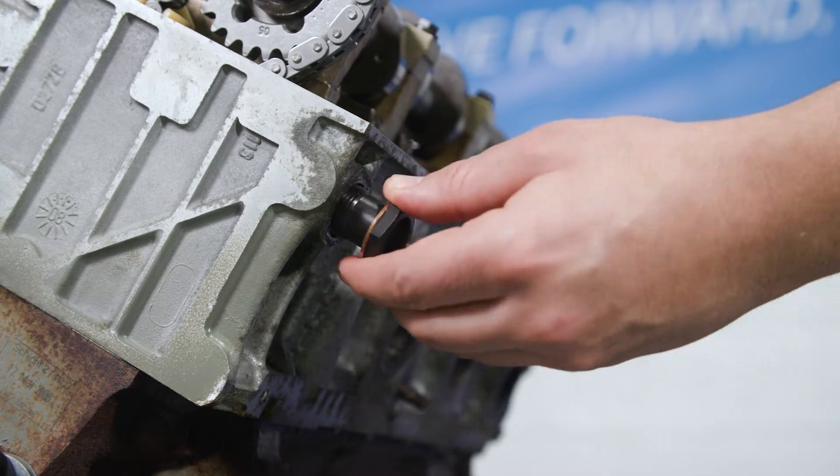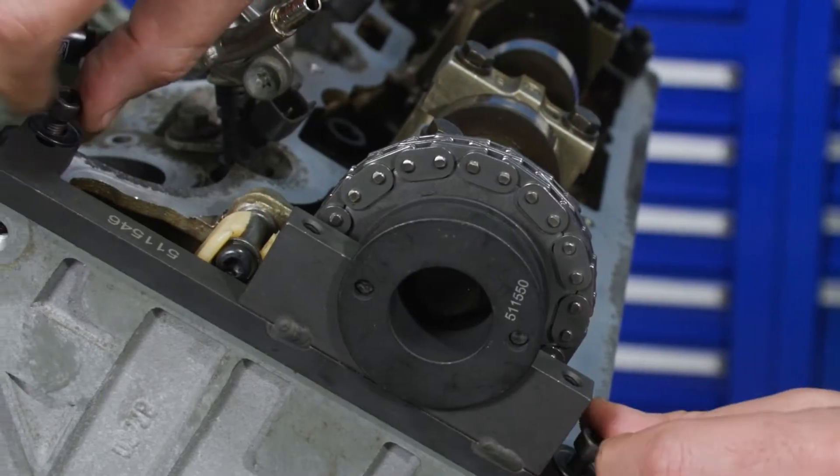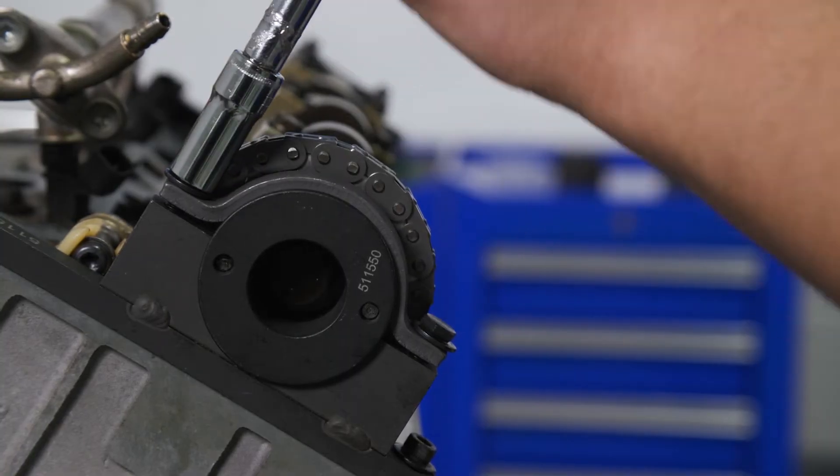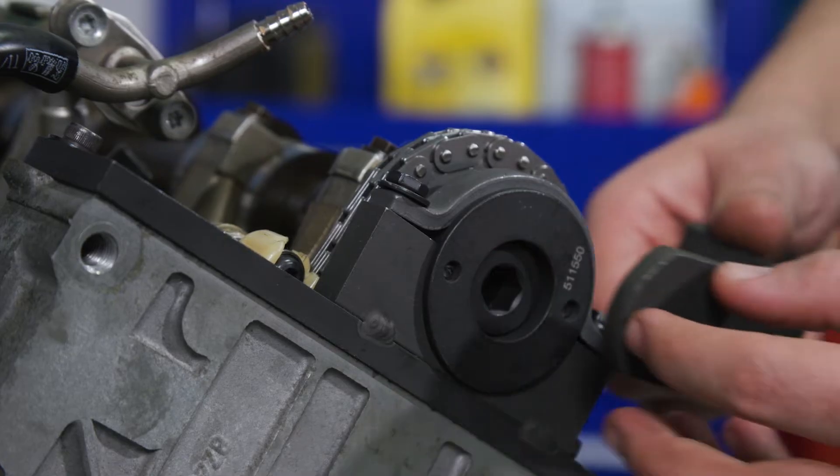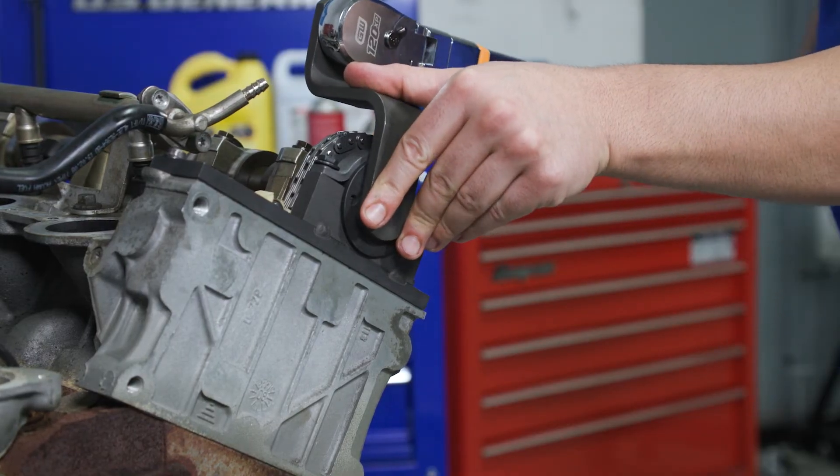Install the dummy tensioner tool, then place the rear camshaft sprocket locking tool and tighten. Torque the camshaft sprocket bolt to 63 foot-pounds. Remember, this is a left-hand thread bolt.